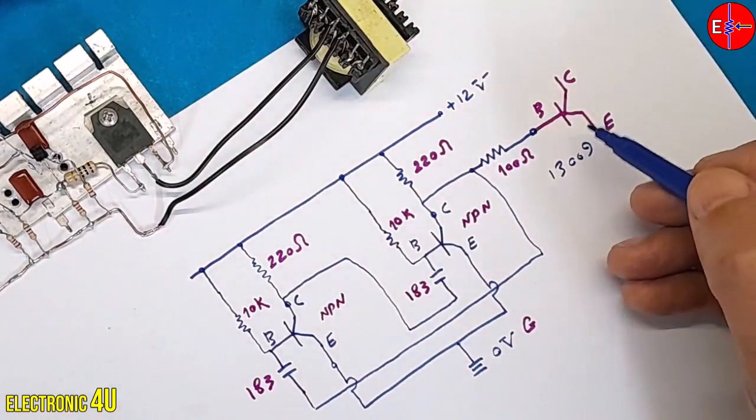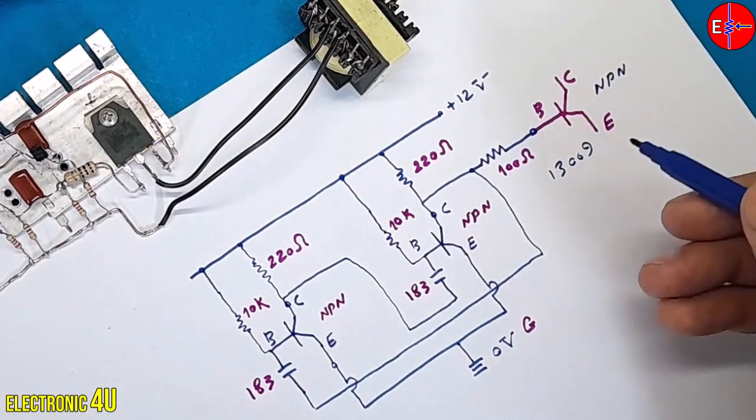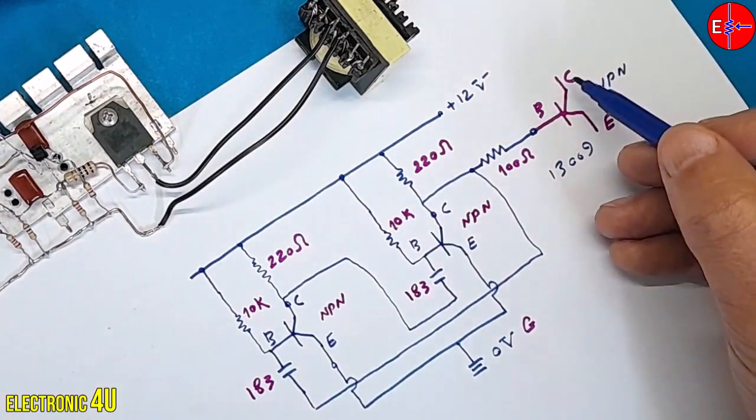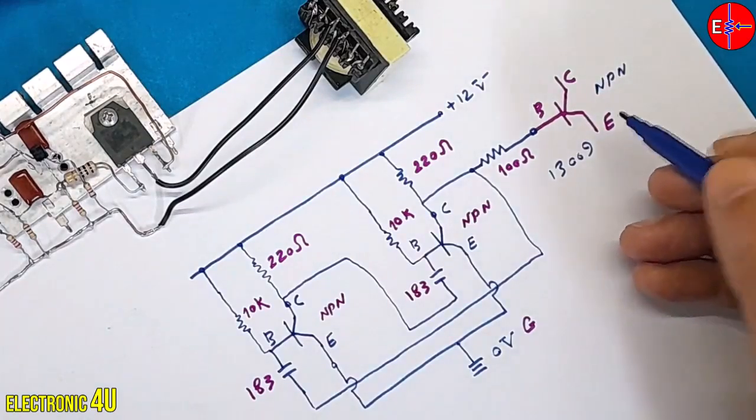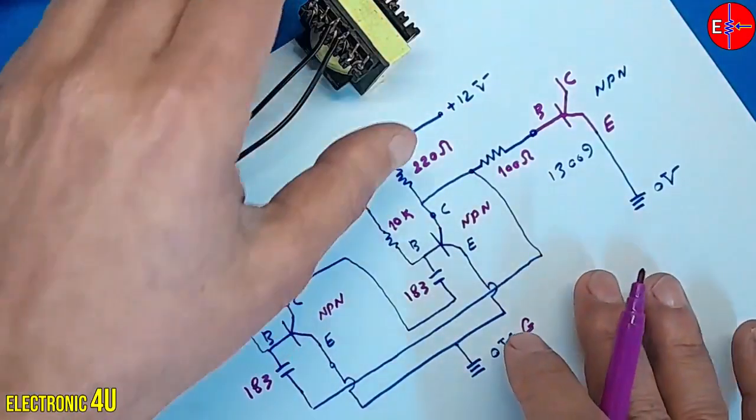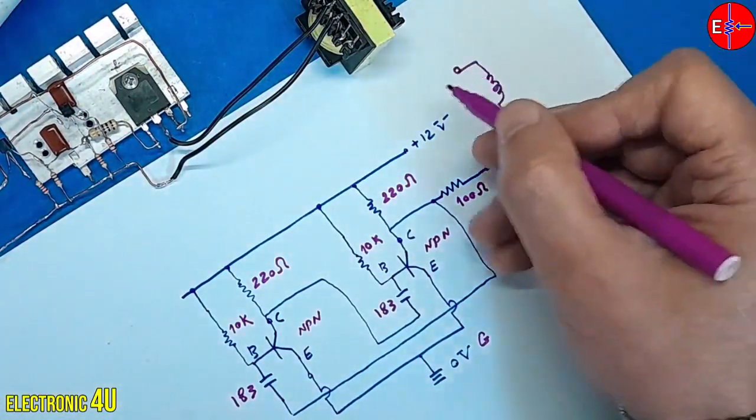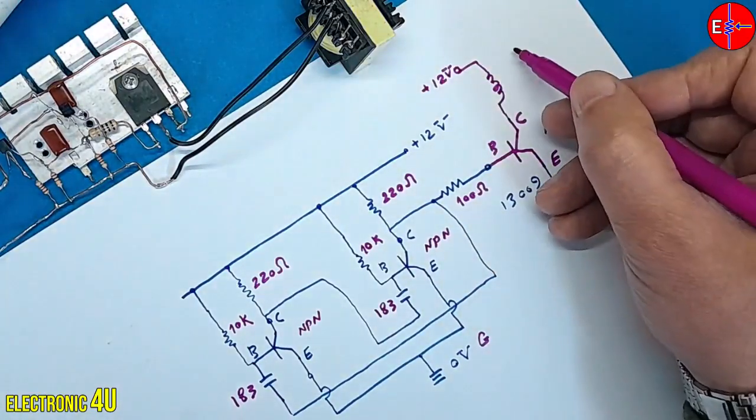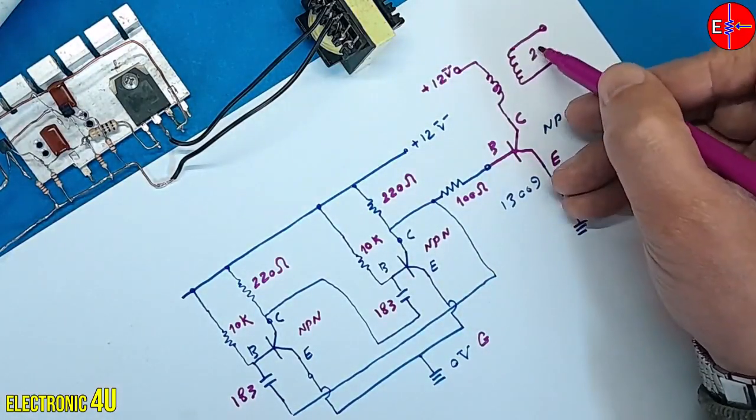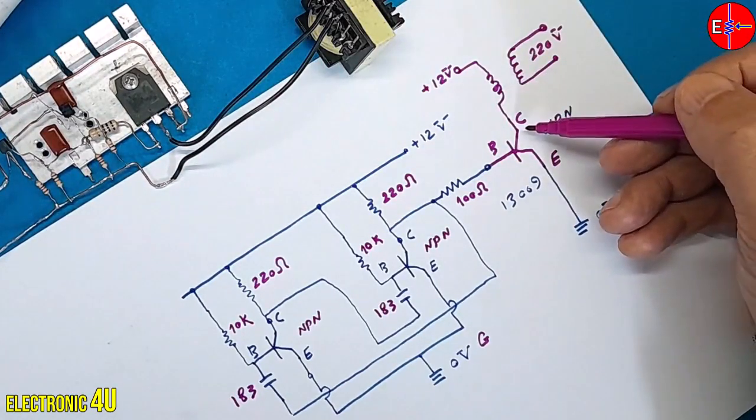As per the nature of an NPN transistor, the voltage enters the collector, and the emitter is connected to ground.